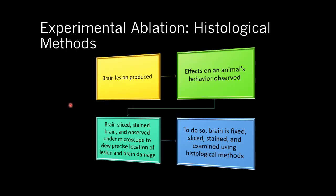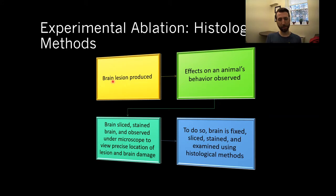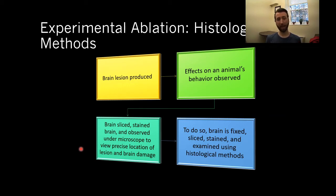The general approach: a brain lesion is produced, we observe effects on the animal's behavior, then slice the brain, stain it, and observe it under a microscope to verify the precise location and extent of the damage. We want to make sure the lesion was where we thought it was. To do that, we fix the brain, slice it, stain it, and examine it using histological methods.